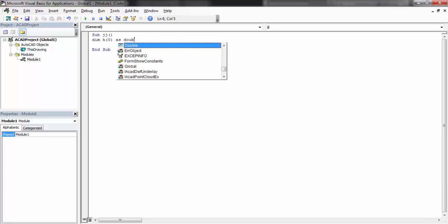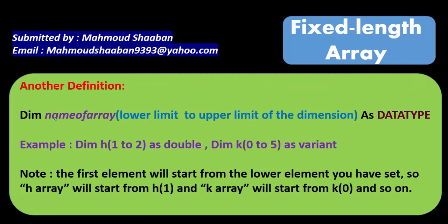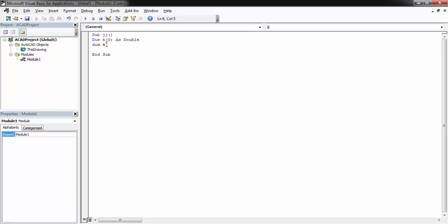The second option is that I can define the array like this: Dim h(1 To 2) As Double or Dim k(0 To 5) As Variant. This means I can set the lower limit — it can be zero or another number as I like. Here the lower limit is one, so the h array will start from index one. The k array starts from zero. I can declare k from one to five as whatever type I want.